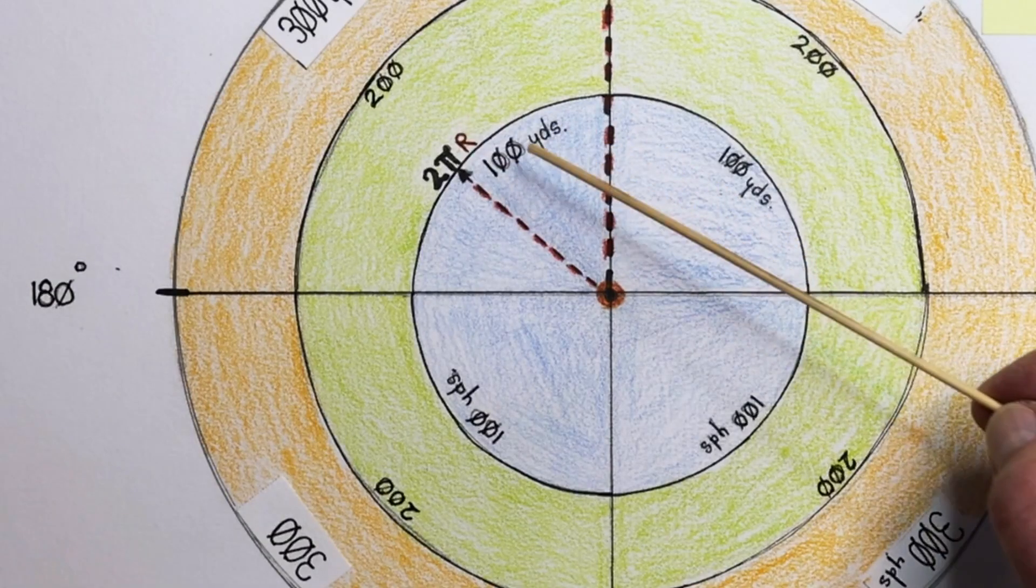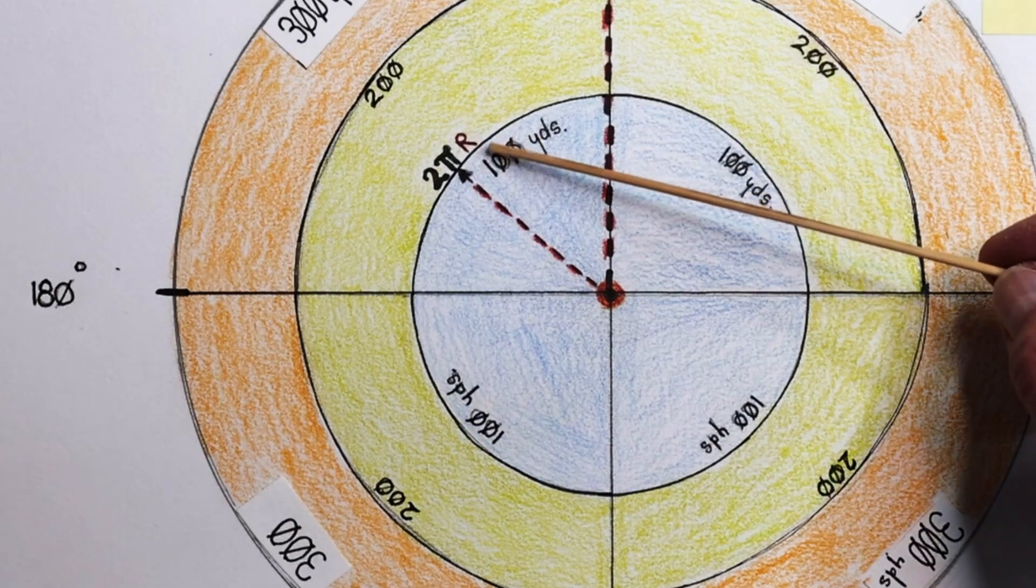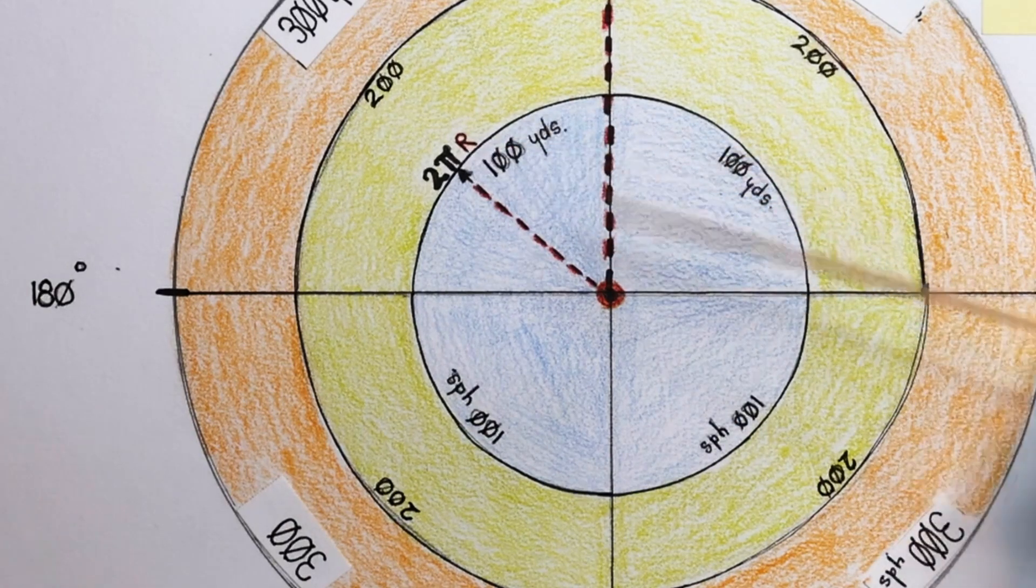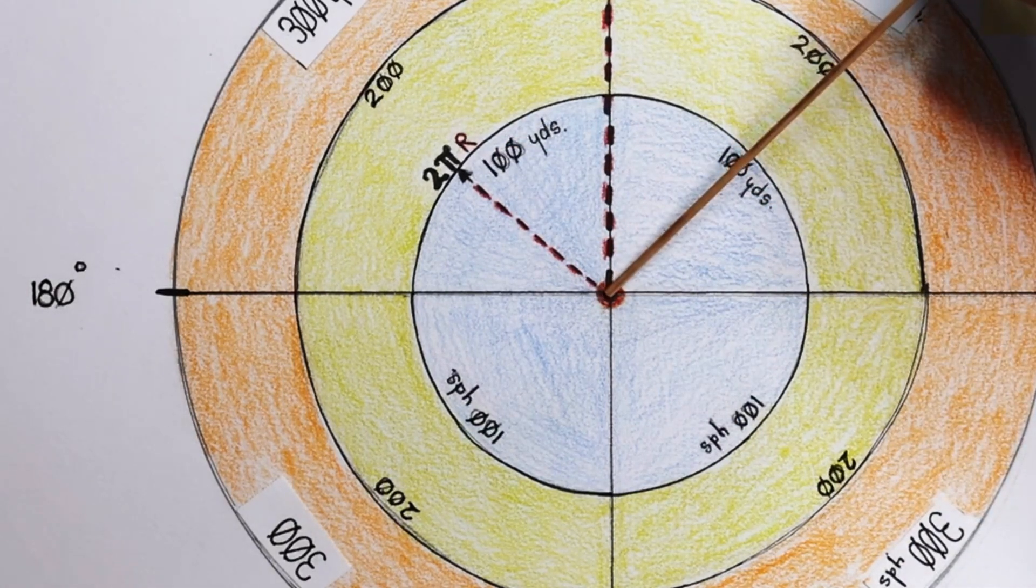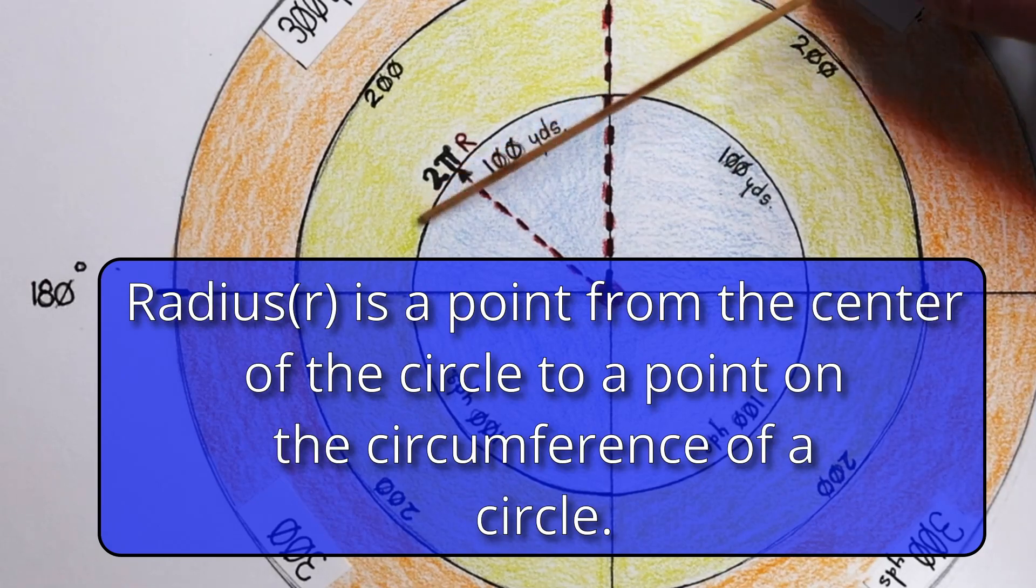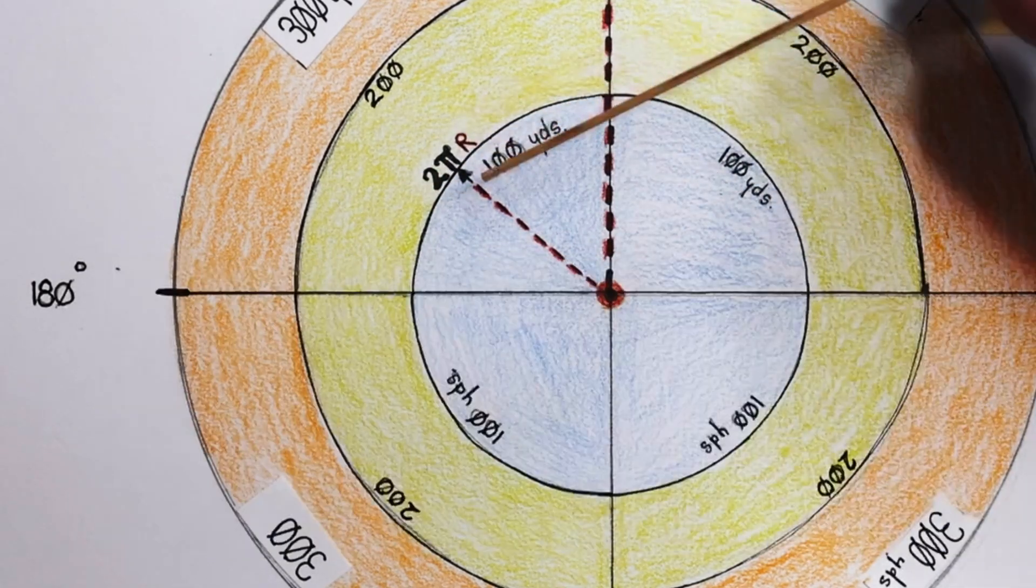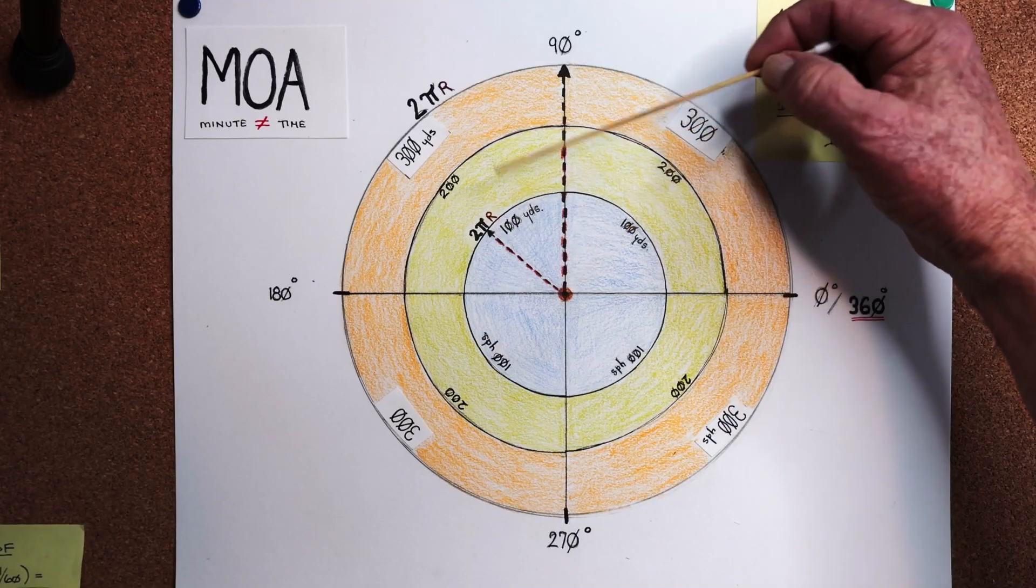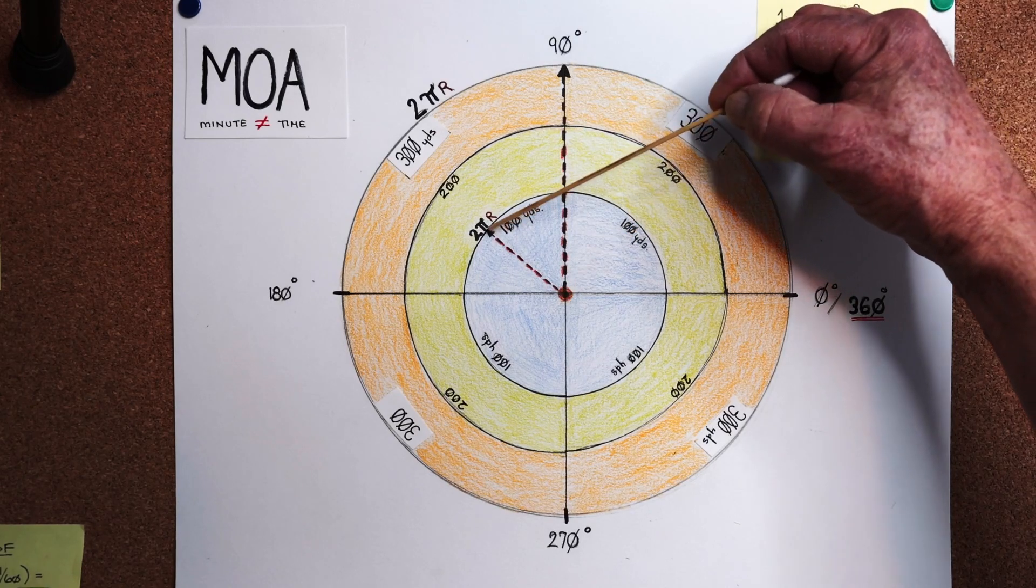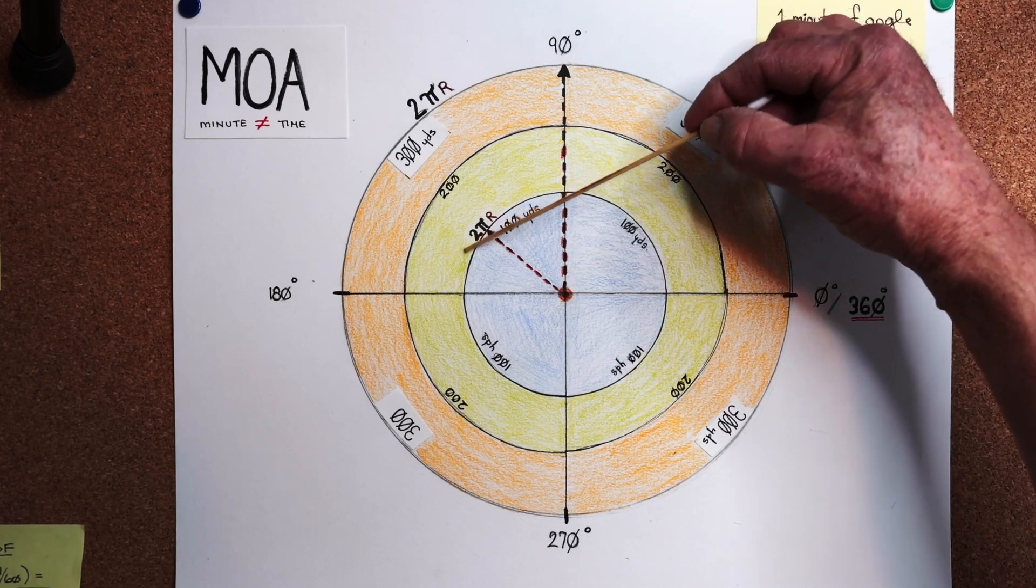So here you'll see that I have this circle here. This is representing 100 yards. Here is a point from the center of the circle out to the edge of this 100 yards. That is referred to as the radius. It's the distance from the center out to a point on the circumference of a circle.